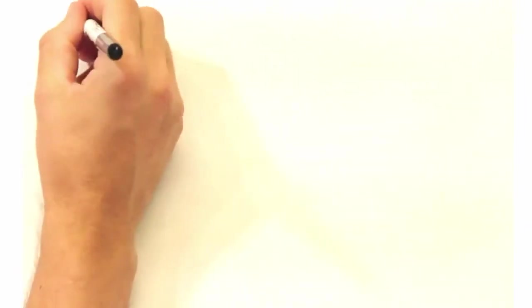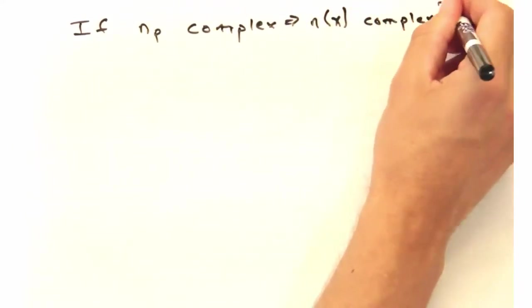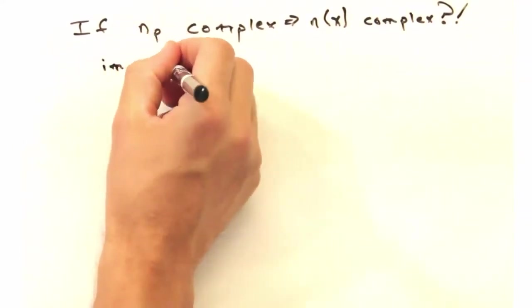Now wait, that doesn't seem right. If our coefficients can be complex, then there's a chance that our n of x could be. And an imaginary charge density doesn't really make sense.